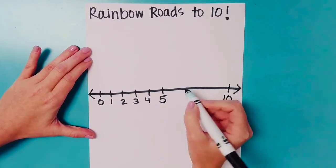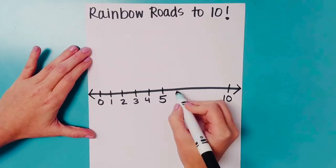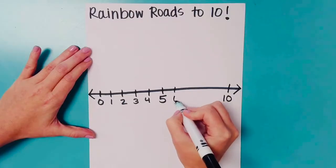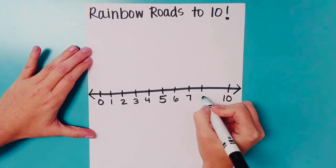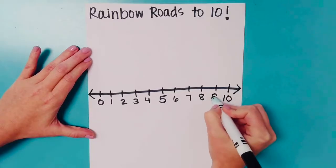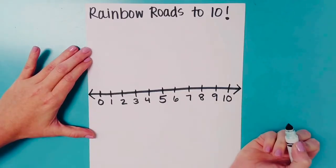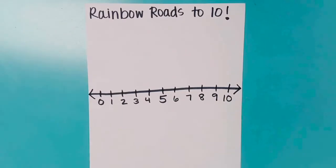You can press pause on the video to make your number line, probably going a little bit fast. Press pause, and then when you have your number line, you can press play.